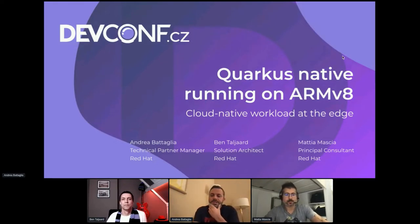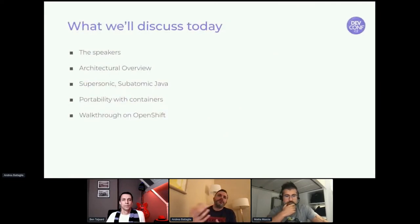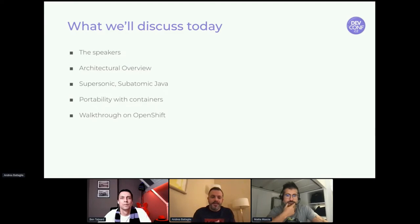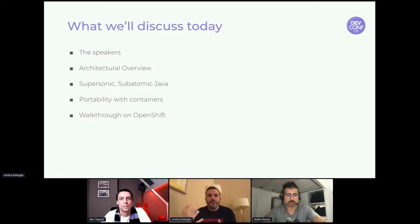Let's go through the presentation. We will quickly introduce ourselves, then give an architectural overview explaining why we spent such an effort implementing automation around ARMv8 and cloud native development. Then Mattia and Ben will discuss Quarkus and why we picked that specific framework based on Java. Last but not least, portability and a walkthrough on OpenShift — we'll demonstrate how it works.